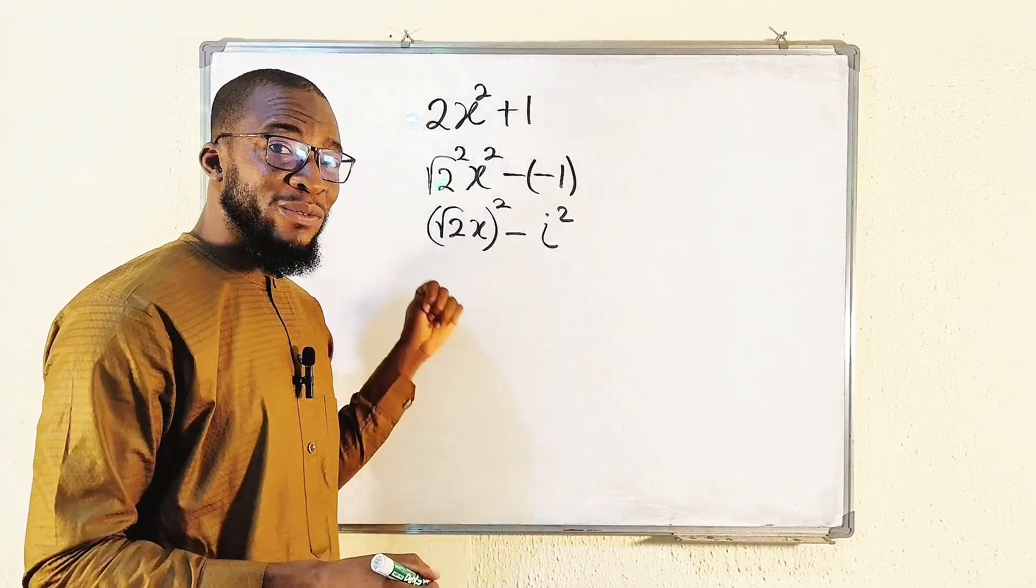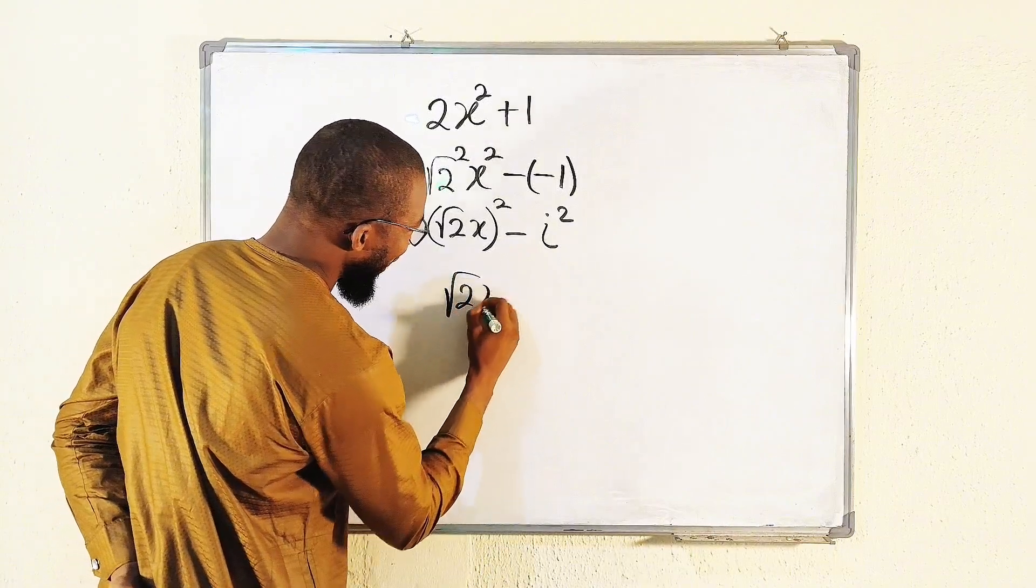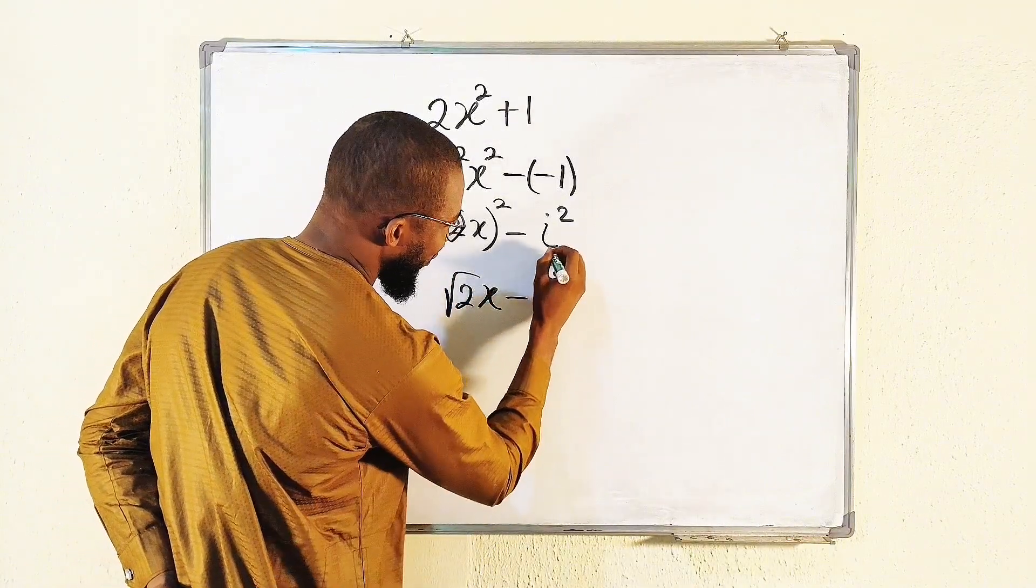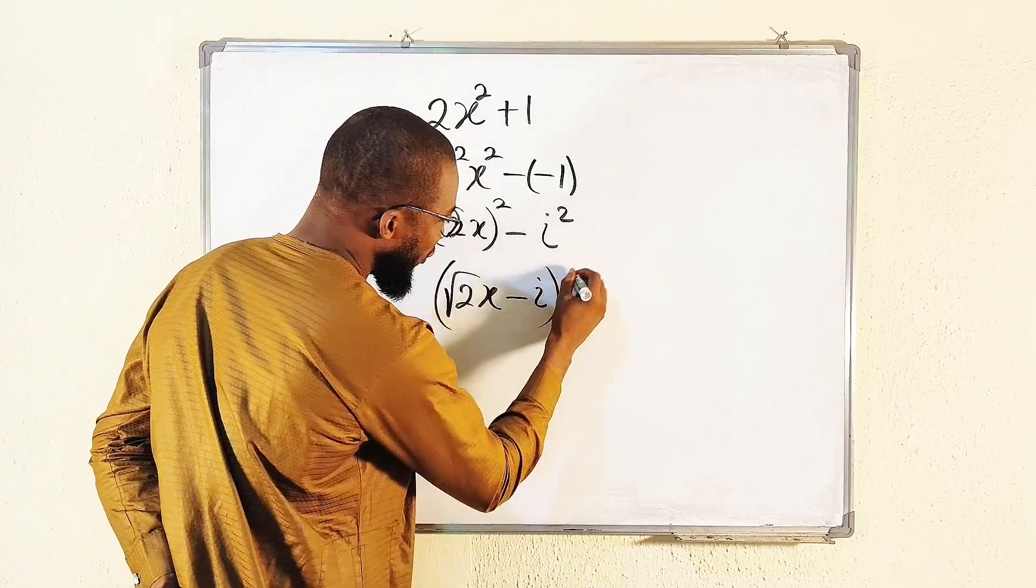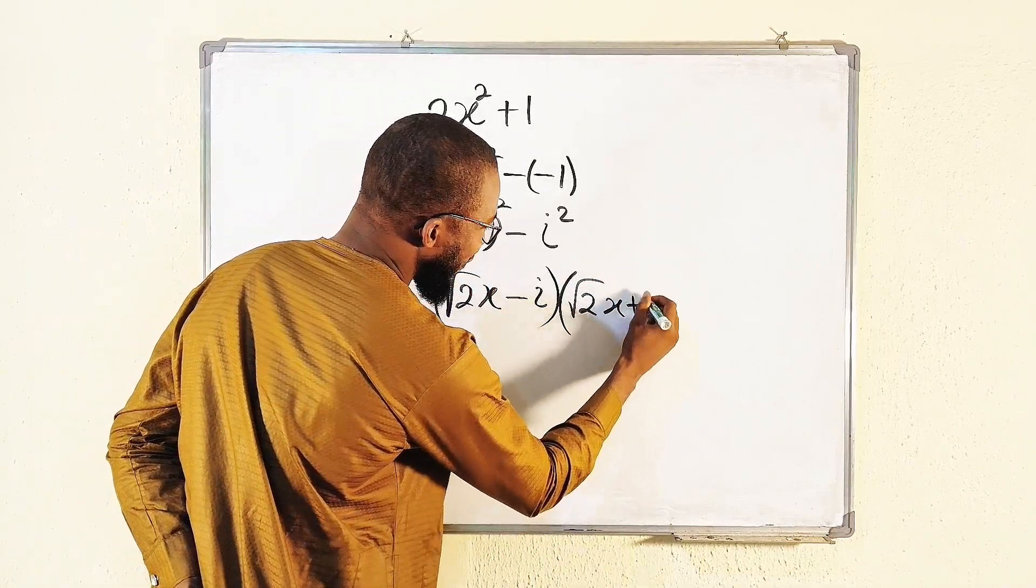We now have difference of two squares. You take the first one, root of 2x. You subtract the second term, i. Then you multiply. You take the first one, you add the second one.